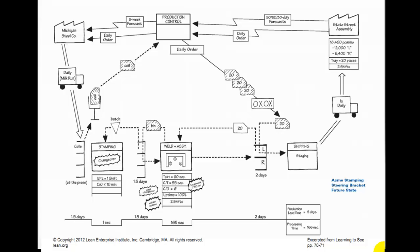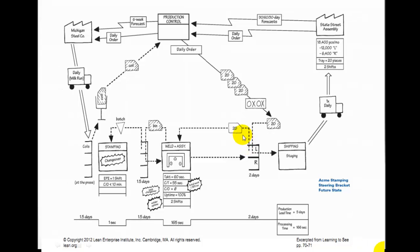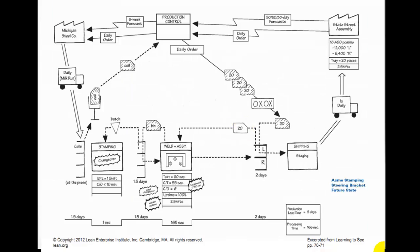So we have one half day here, one half day here, and 165 seconds — but that was three of those processes combined. We have two days in here for this supermarket. Here we have our order Kanbans going back for every tray taken out by shipping from the shipping supermarket. We have this Kanban order for 20 parts, and we do something similar here with stamping.